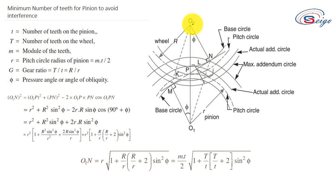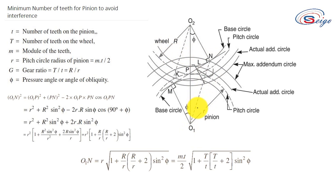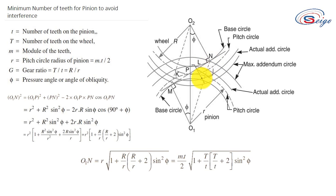The maximum addendum will be equal to O2M for the gear wheel and O1N for the pinion. We are going to determine the value of O1N first, and after that we will arrive at the minimum number of teeth.